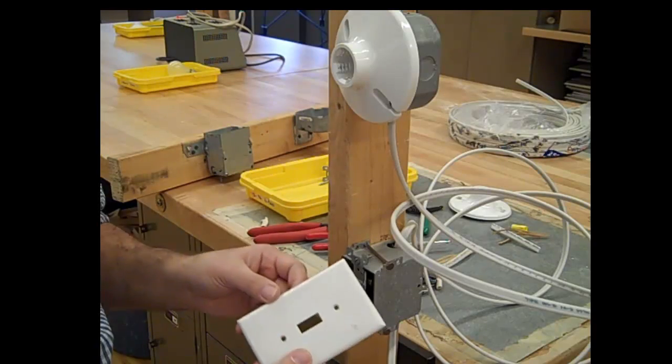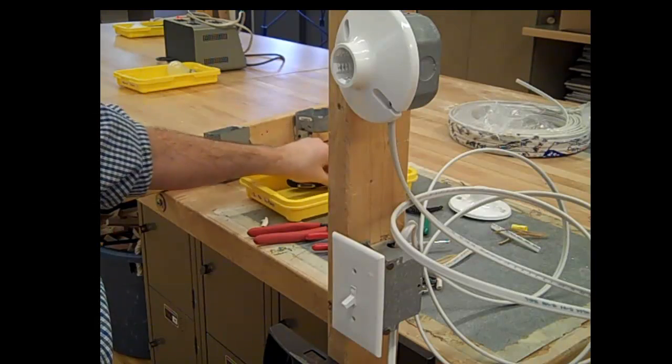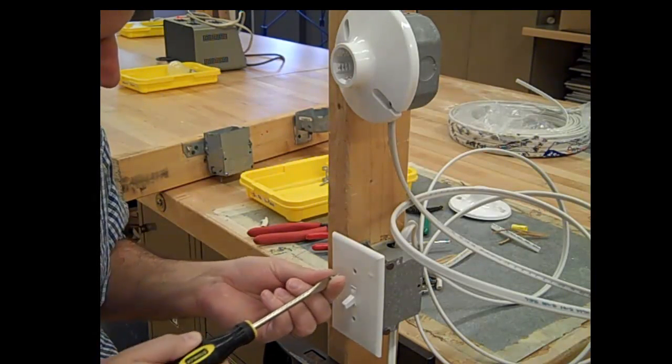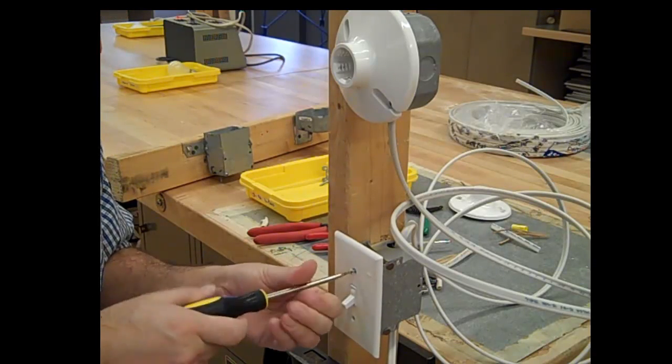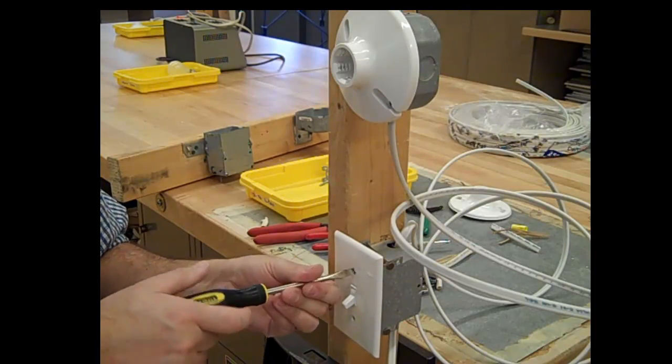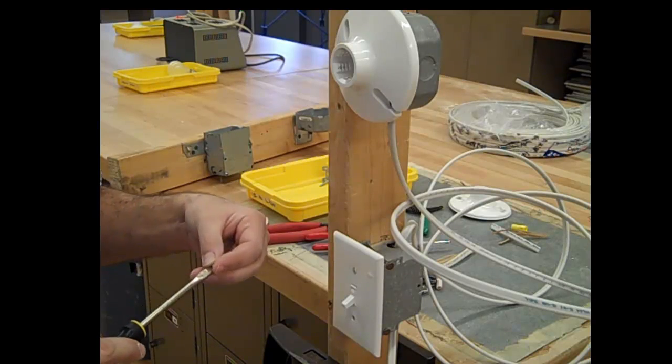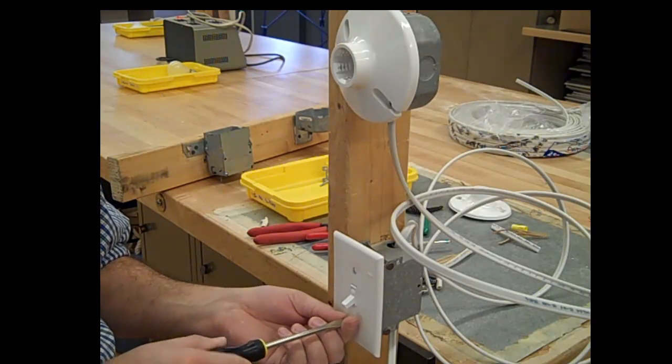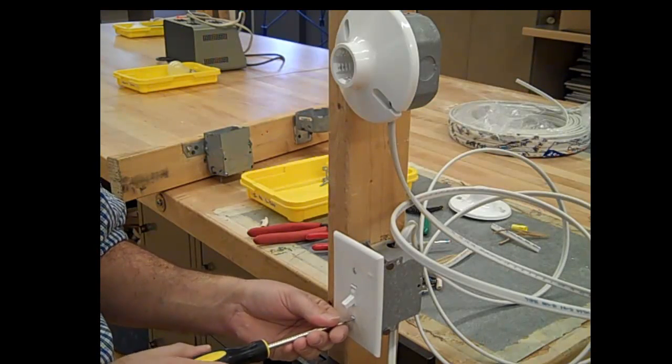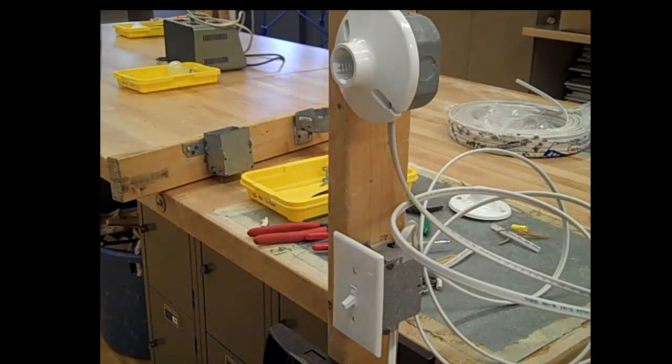We'll put our light switch cover on. There's two flathead trim screws, they're white and short, and that's what holds these on.